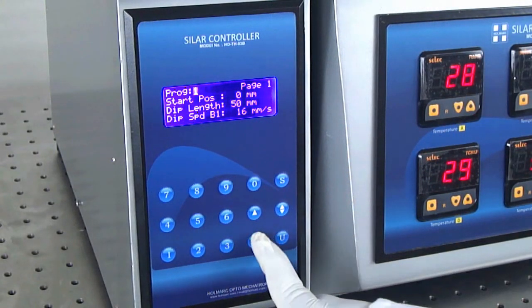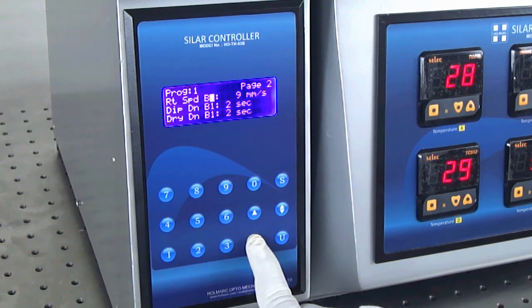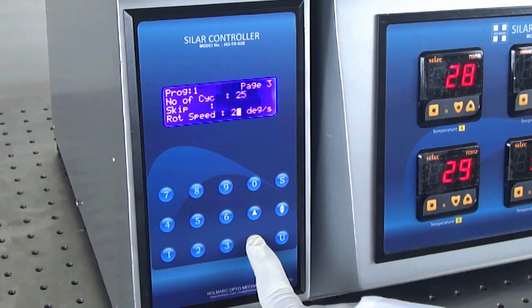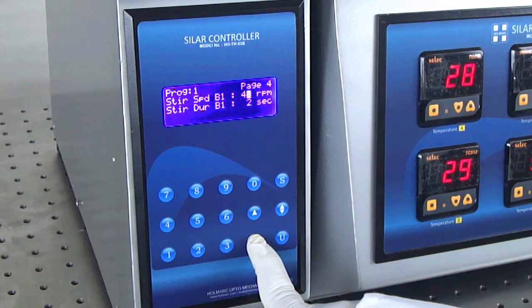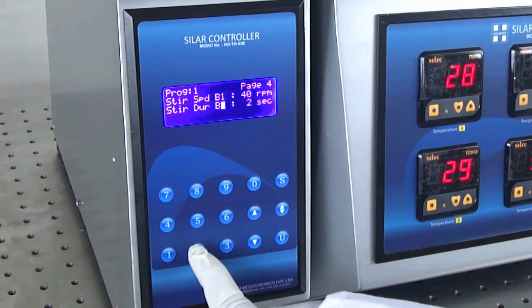The unit provides a user-friendly front panel with keyboard and LCD display to enter all process parameters such as dip speed, dip duration, length of travel, number of dips, etc. We can also set different values at each of the six dipping platforms.